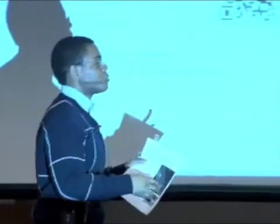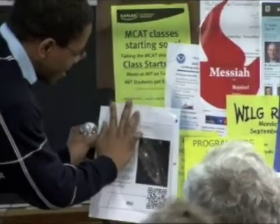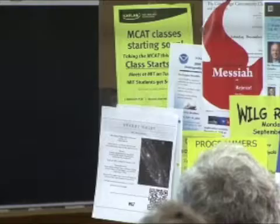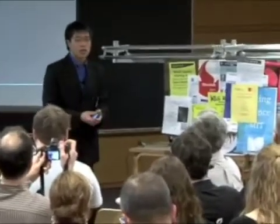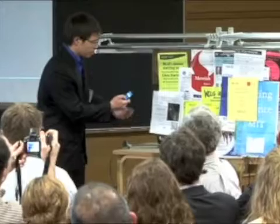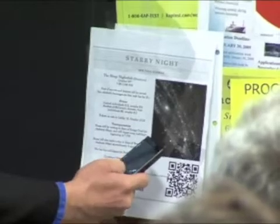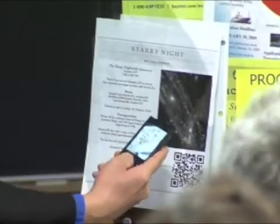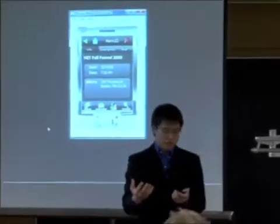Now he's just going to go over to the bulletin board like he normally would and place it over here. Now let's see what Sarah does. So today Sarah walks by the bulletin board and she sees the poster for MIT Fall Formal. She recognizes the 2D barcode on the poster and decides to use the Mem2D application to save this event onto her phone. So she goes up to the bulletin board, focuses the camera on the 2D barcode, and clicks scan. Now the application is decoding this 2D barcode and retrieving the information onto her phone.